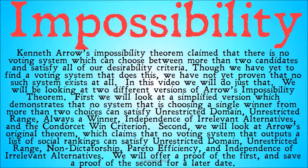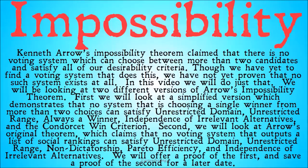After that, we will look at and state — though not prove — Arrow's original theorem, which claims that no voting system that outputs a list of social rankings can satisfy unrestricted domain, unrestricted range, non-dictatorship, Pareto efficiency, and independence of irrelevant alternatives.